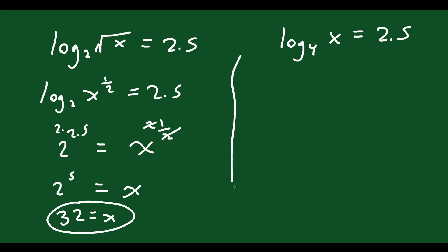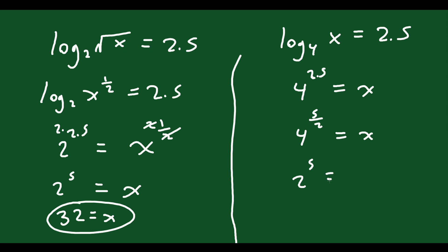You could also solve it on the right: 4 to the 2.5 equals x. That's 4 to the 5/2 — 4 to the 1/2 is 2, so really you have 2 to the 5, which is also 32. You get 32 regardless of which way you choose to solve it — you're going to get the right answer.